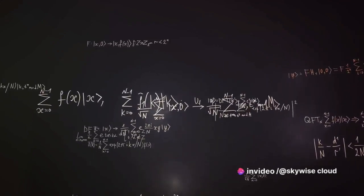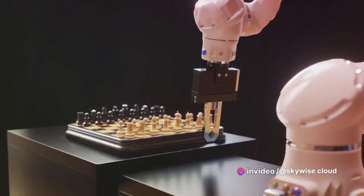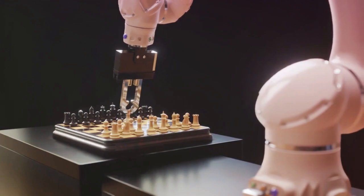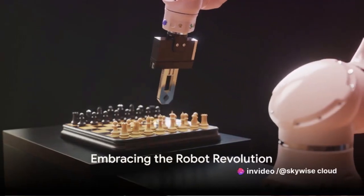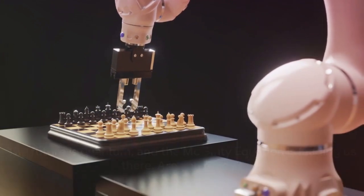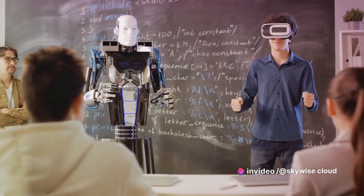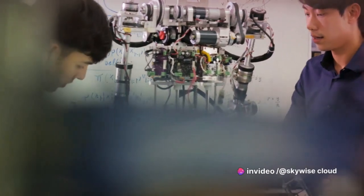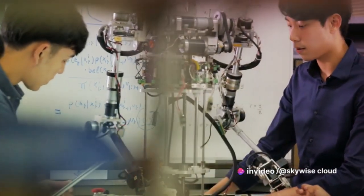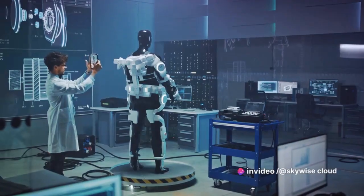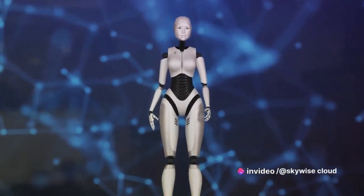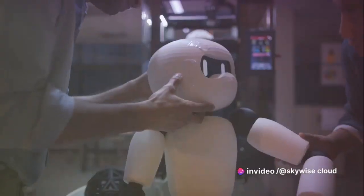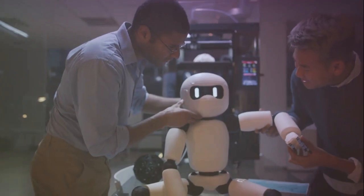Robots can help us explore the universe, protect our planet, and even understand ourselves better. As we continue to unravel the mysteries of the McGinty equation and quantum robotics, incredible innovations await us. The McGinty equation is a catalyst for change — it transcends the traditional boundaries of robotics and AI, enabling robots to become autonomous and self-learning. By leveraging the power of quantum physics, the McGinty equation enhances robot autonomy, allowing them to make complex decisions independently.